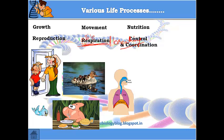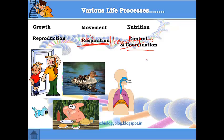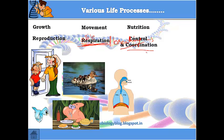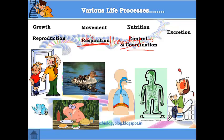After respiration we have control and coordination — there's a separate chapter for it, but simply put: control means having command over something, and coordination means performing a series of actions in a synchronous way. Every organ in our body knows what to do, when to do it, and how to do it.